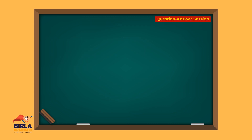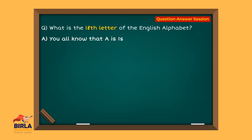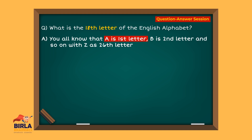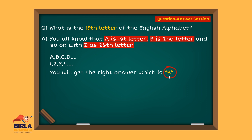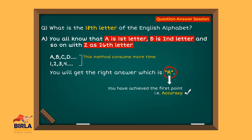Let's start with a very simple question: what is the 18th letter of the English alphabet? You all know that A is the first letter, B is second, and so on, with Z being the 26th letter. You can try by saying or writing A, B, C, D and counting 1, 2, 3, 4 simultaneously. You will get the right answer, which is R — achieving accuracy. But have you noticed the amount of time you had to spend with this method? With this method, you couldn't achieve speed.